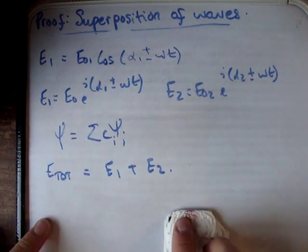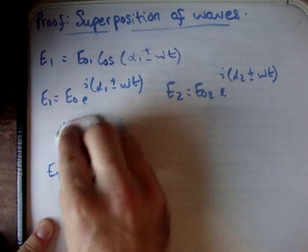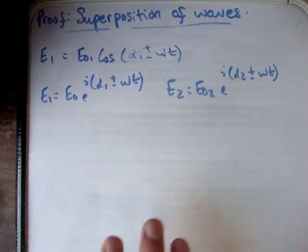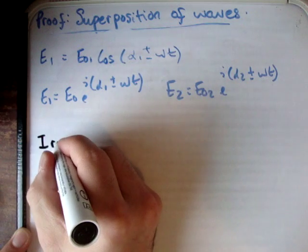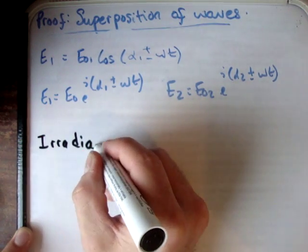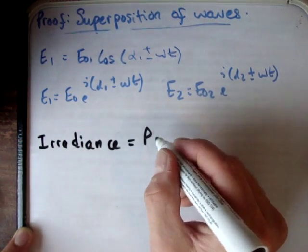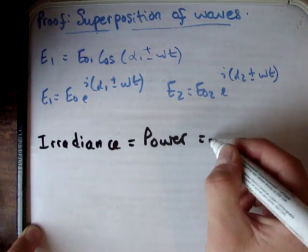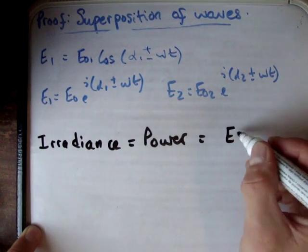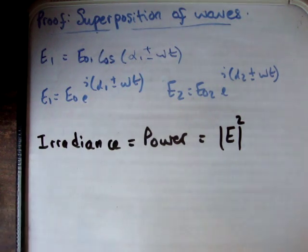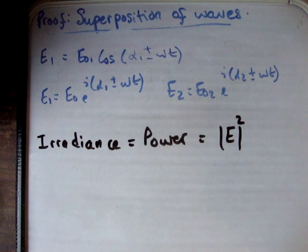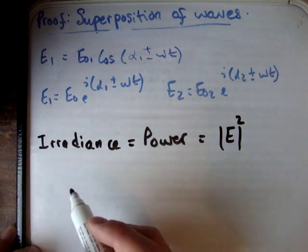The next thing we need to do is define our irradiance. Irradiance is the power, and the irradiance is equal to the magnitude of the electric field squared. But our electric field is a complex quantity, so in order to get the square of a complex quantity, you need to multiply it by its complex conjugate.